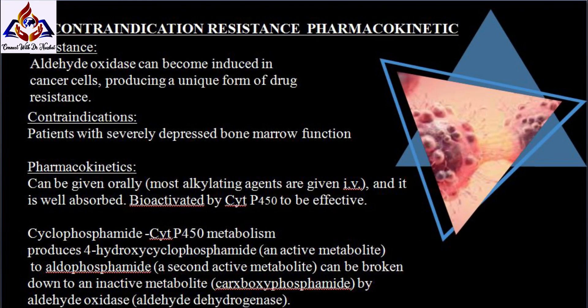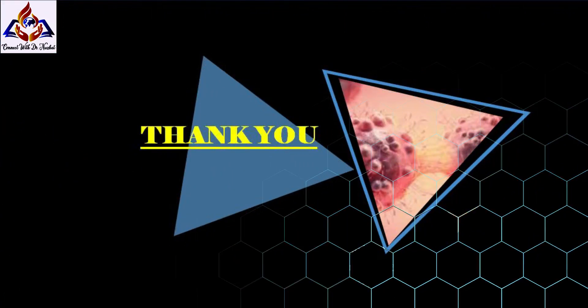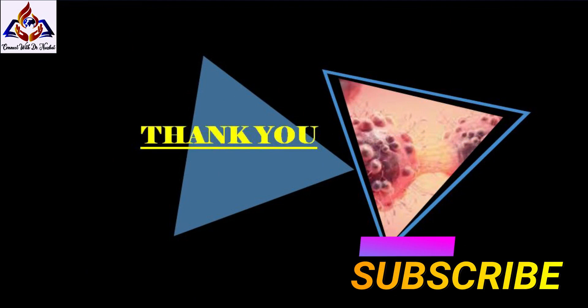Contraindications: patients with severely depressed bone marrow function. Pharmacokinetics: these drugs can be given orally, though most alkylating agents are given intravenously and are well absorbed. They must be bio-activated by cytochrome P450 to be effective. Aldehyde oxidase, which converts active metabolites to inactive metabolites, can become induced in cancer cells, producing a unique form of drug resistance.